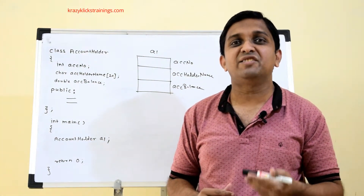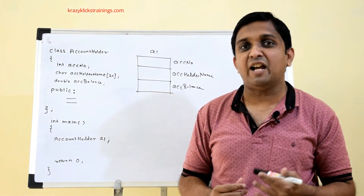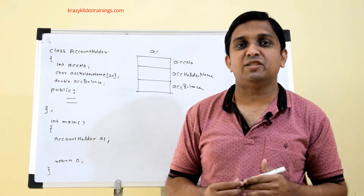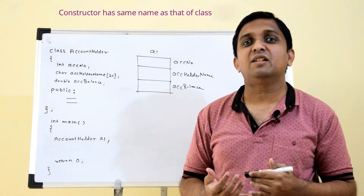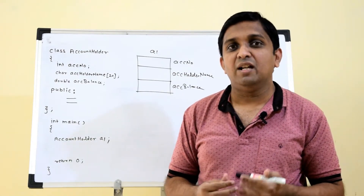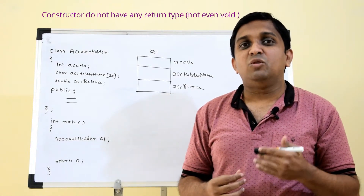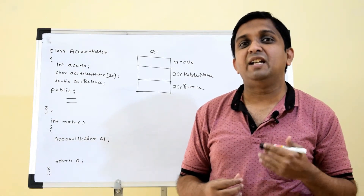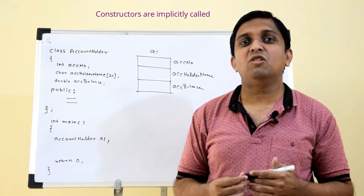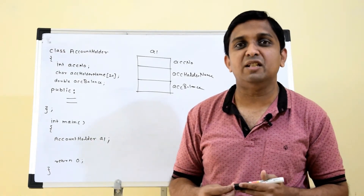The solution is a constructor. A constructor in C++ is also a member function, like accept and display, but with special characteristics. First, the constructor has the same name as the class — if the class is AccountHolder then the constructor name is AccountHolder. Second, the constructor does not have any return type, not even void. Third, constructors are implicitly called, meaning they are automatically called without needing to call them explicitly like other member functions.